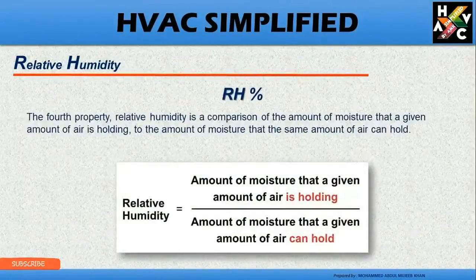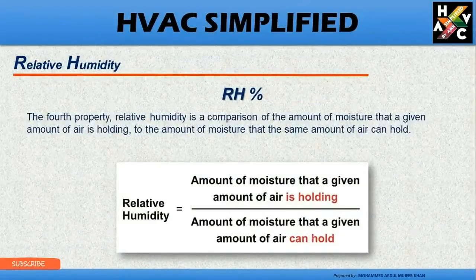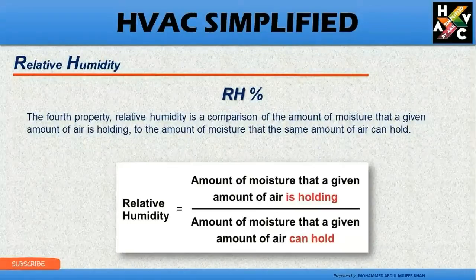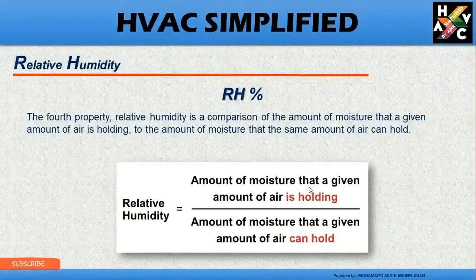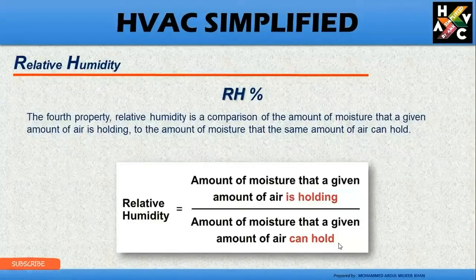Relative humidity. Relative humidity is the comparison of the amount of moisture that a given amount of air is holding to the amount of moisture that the same amount of air can hold. It is the terminology used in percentage to identify the amount of moisture in the air. So relative humidity equals the amount of moisture the air is holding divided by the amount of moisture it can hold.